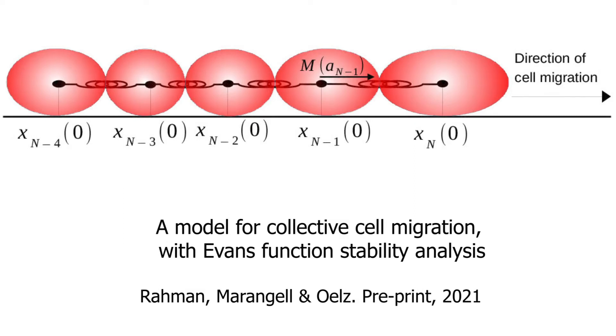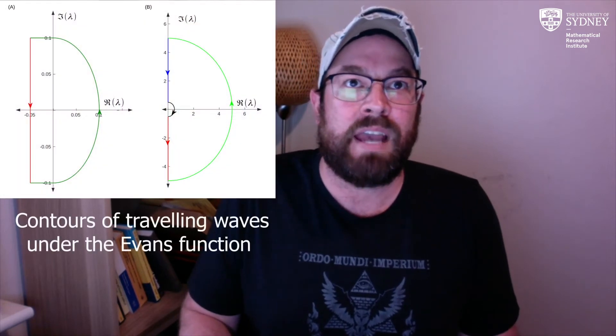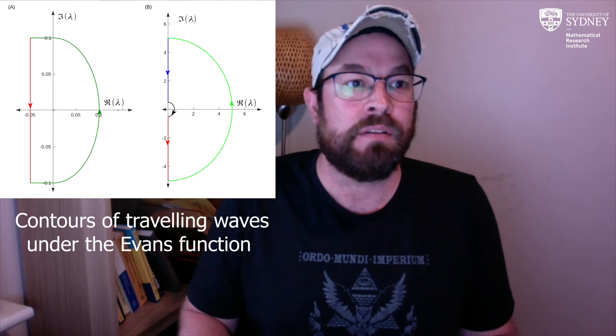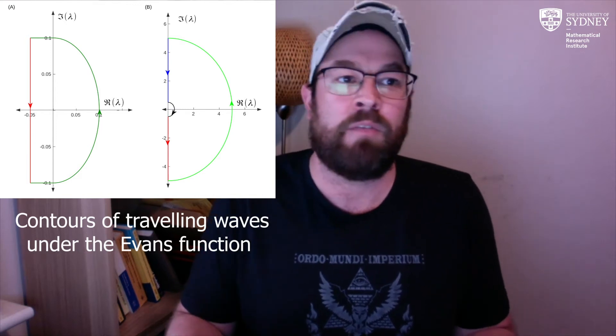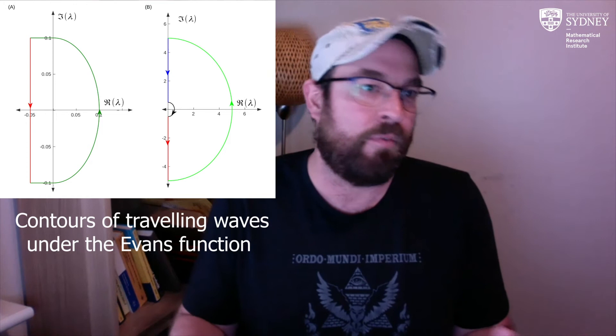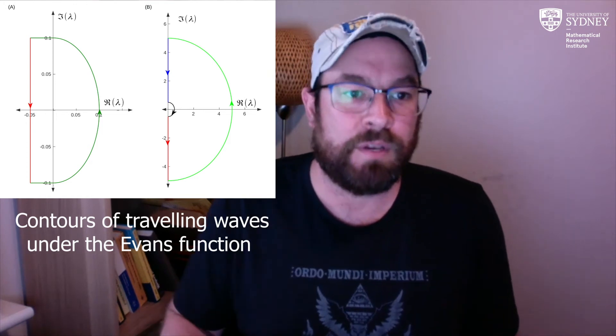This project also breaks new ground by drawing connections between Lie Symmetry and the Evans function. The Evans function is a function that tells you where the eigenvalues of a linear operator are. In some sense, the Evans function is a means of detecting, to first order, the stability of your favourite travelling wave, or solution to a partial differential equation.